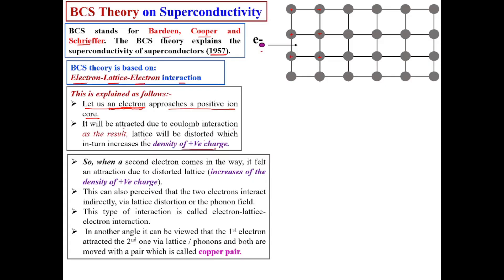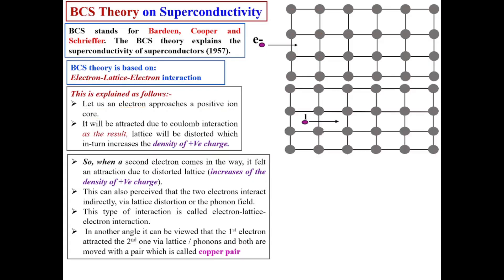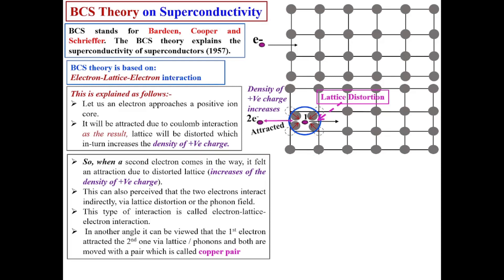As you can see here, when the electron reaches this position, due to Coulombic attraction these positive ions are attracted towards the electron, causing lattice distortion. Due to this lattice distortion, the density of positive charges increases in that particular area.